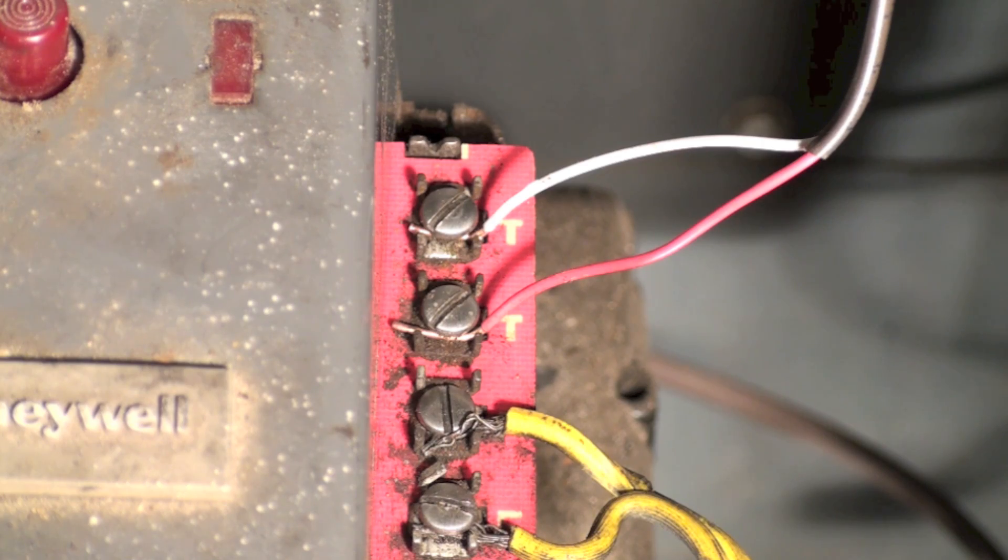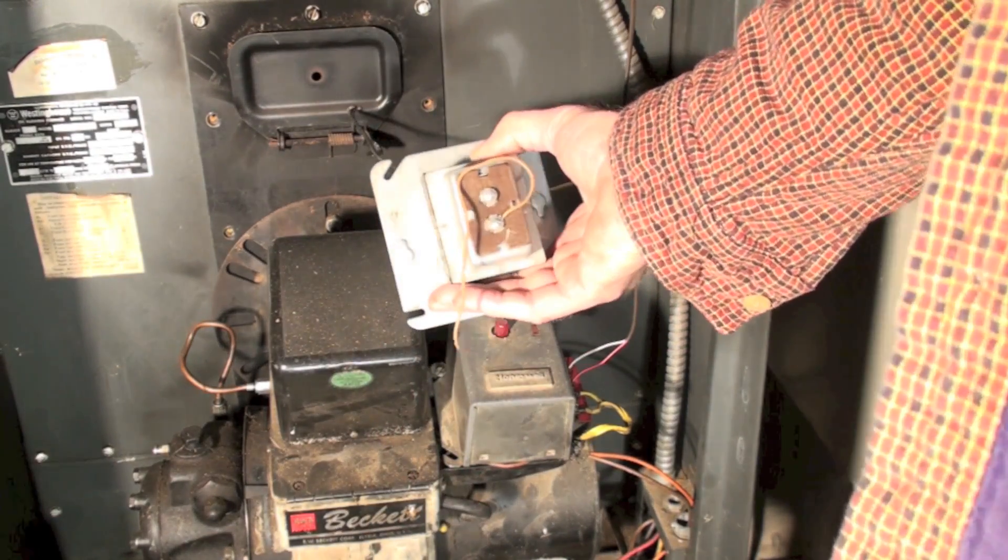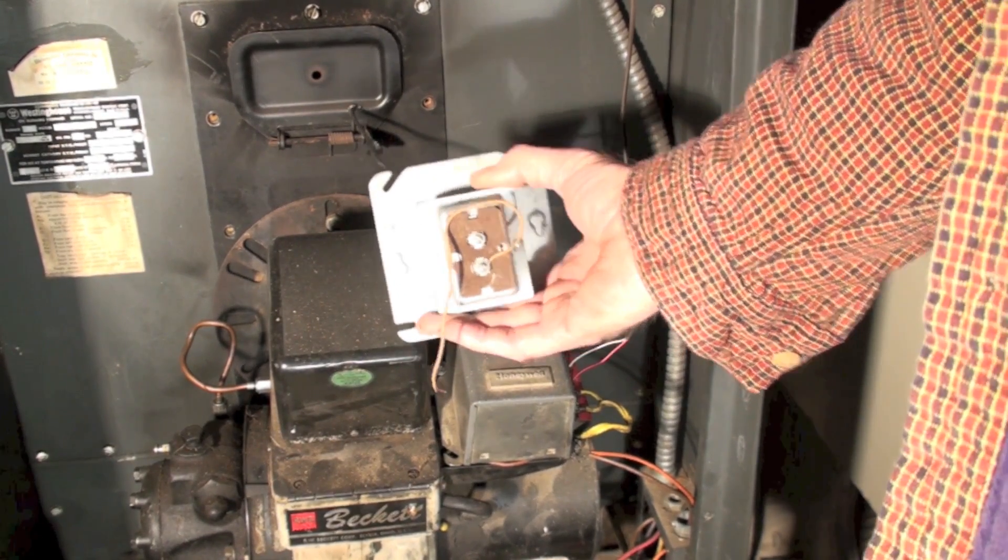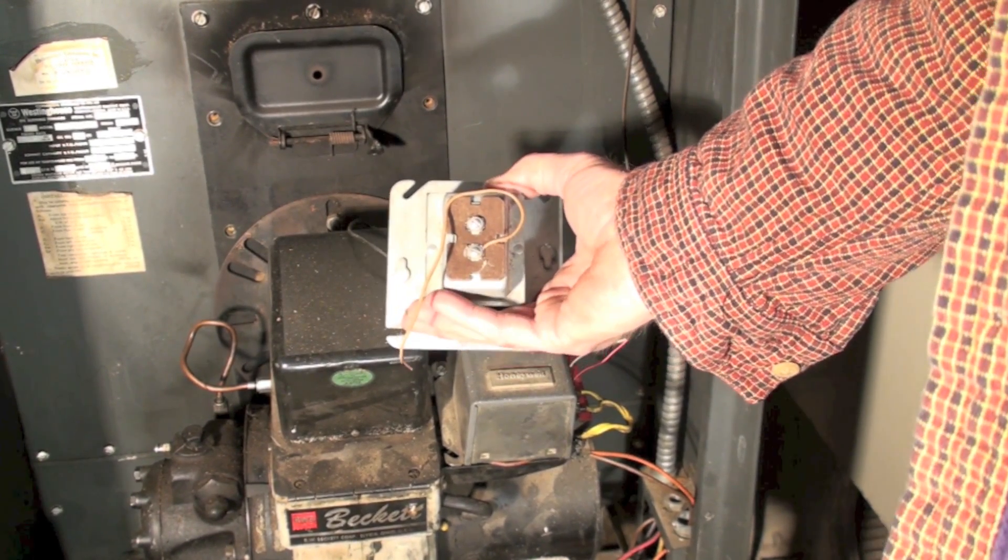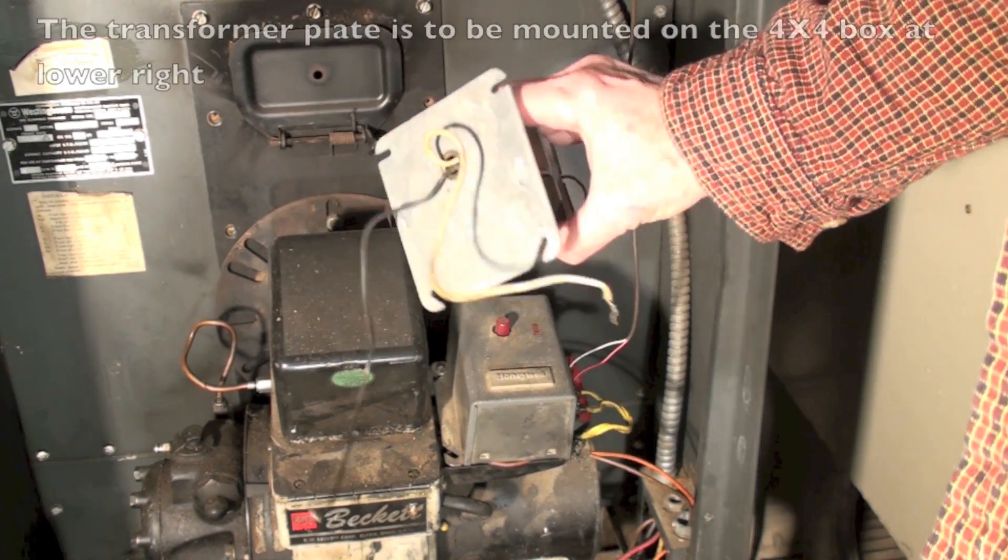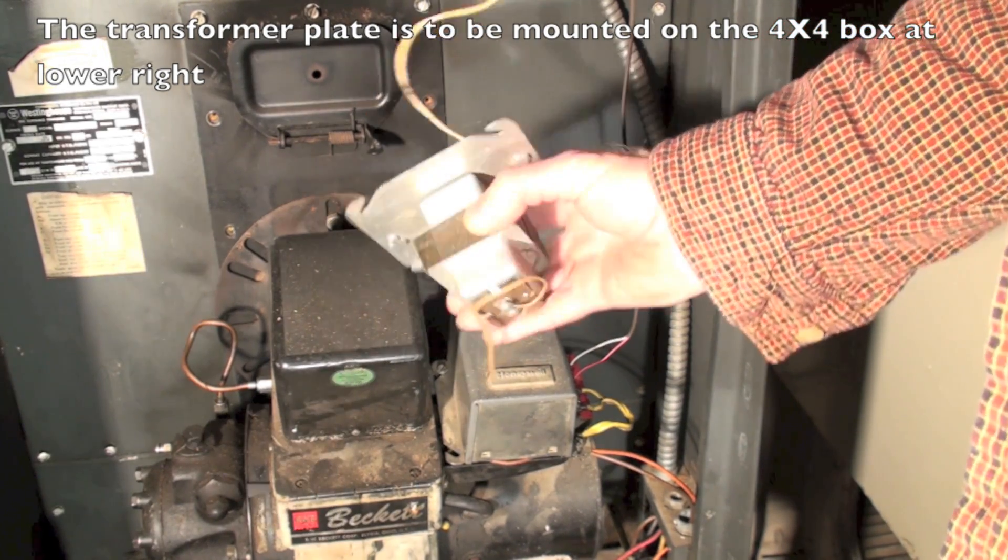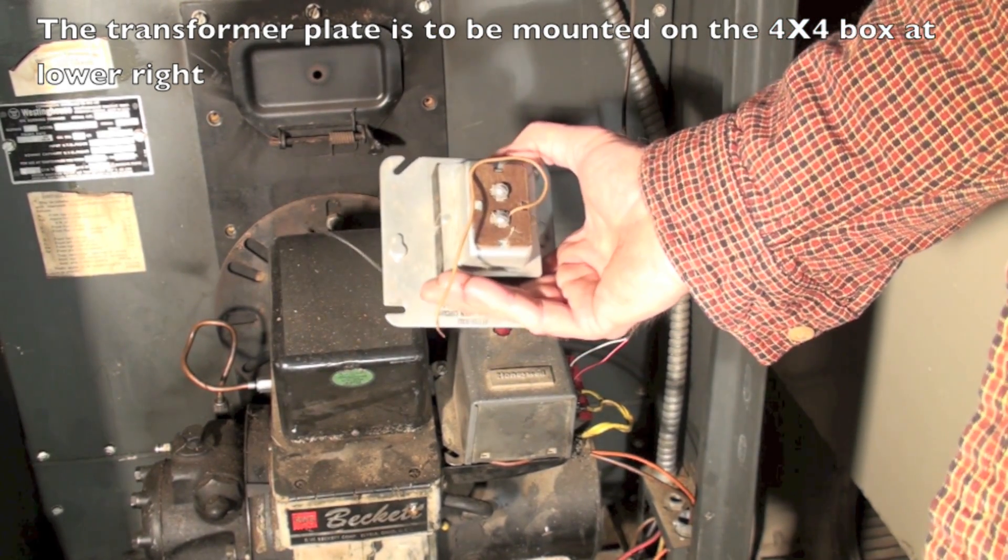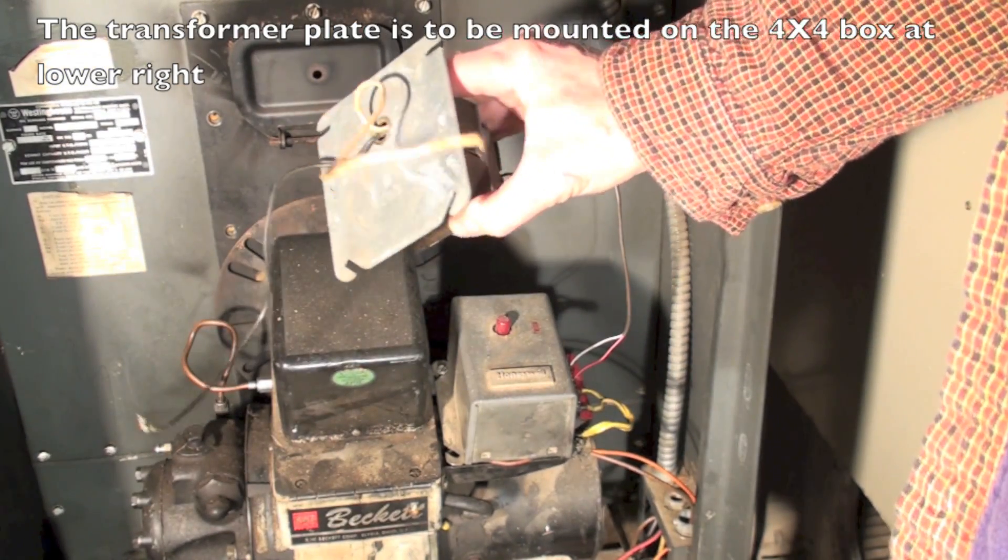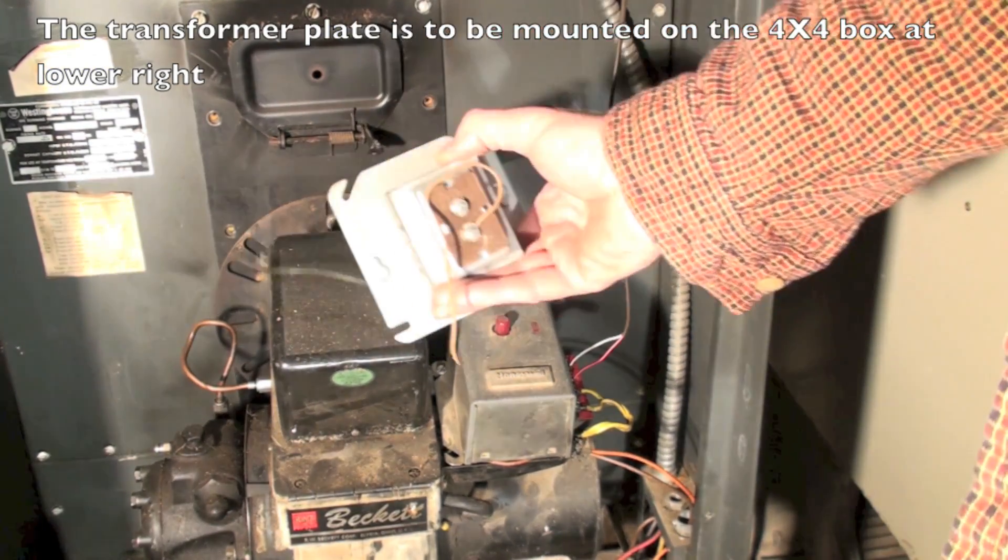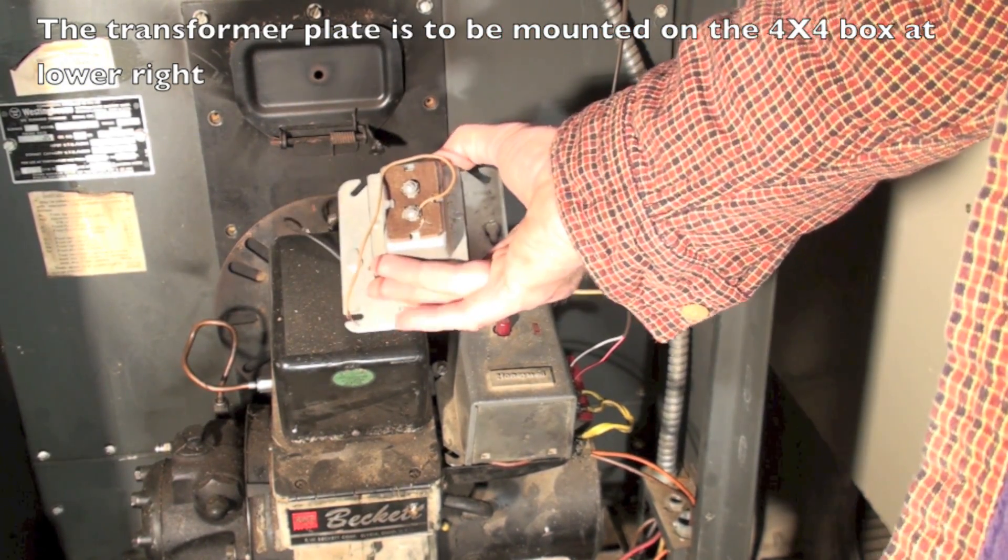This is going to be one way of solving this problem. I'm just taking a transformer that's mounted on a four by four plate, and I'm going to put it on the furnace so there's power to it. This is the 120 volt side all the time, and I'll have 24 volts coming out of there.